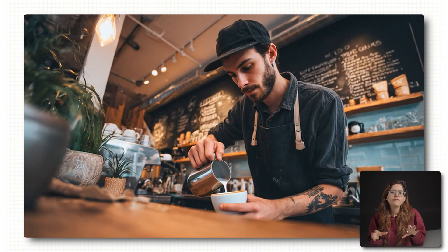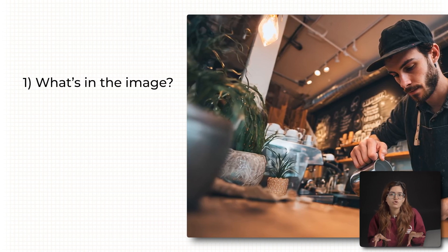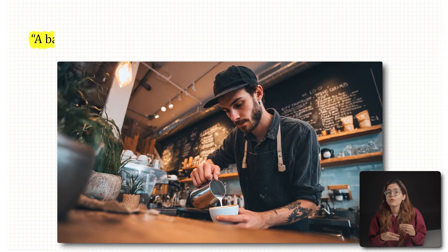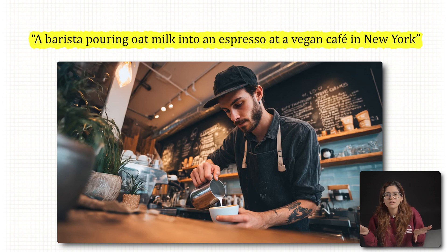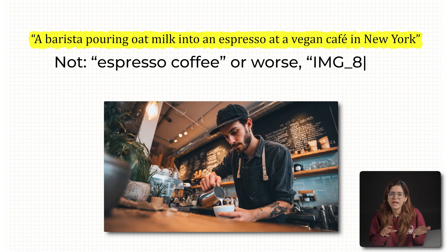Let's say I've got this image. Tell the AI what's in the image, who it's for, and what makes it unique. Think: 'a barista pouring oat milk into an espresso at a vegan cafe in New York' — not just 'espresso coffee', or worse, 'IMG 8342'.